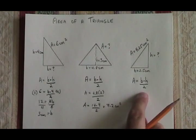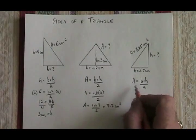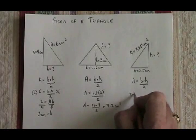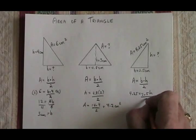In the third triangle, we know our area and our base and we'd like to know our height. Filling in the formula, 4.25 is equal to 2.5 times H over 2.